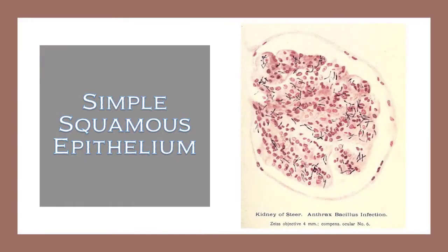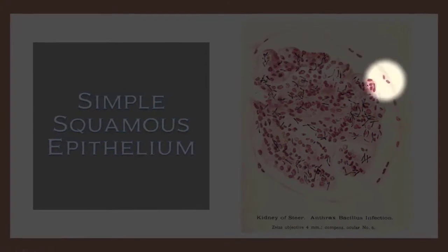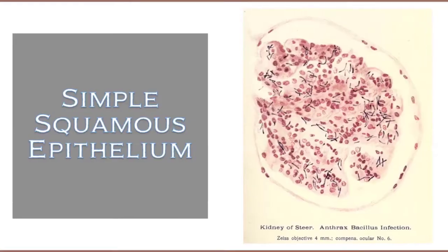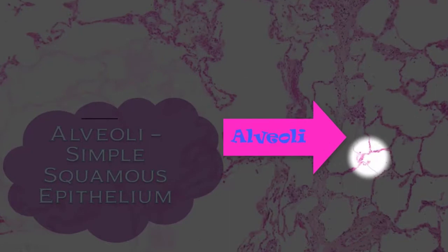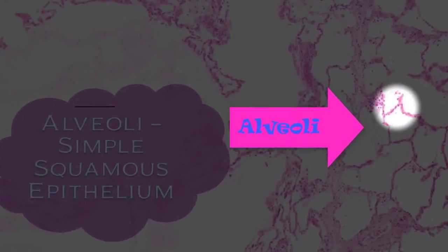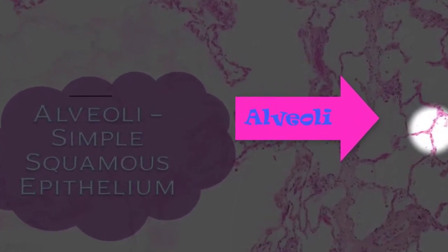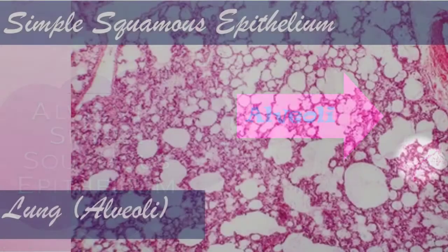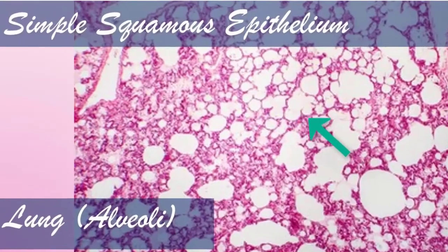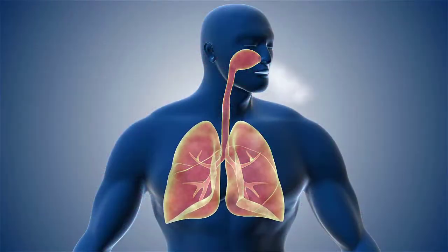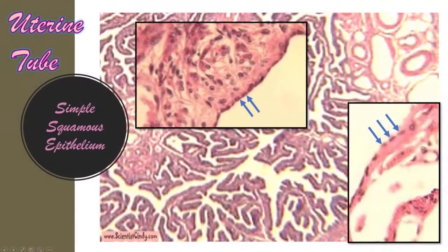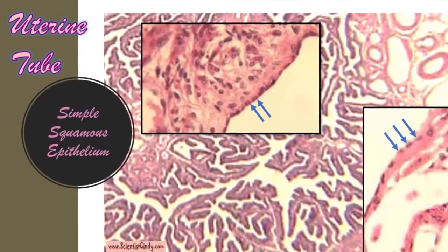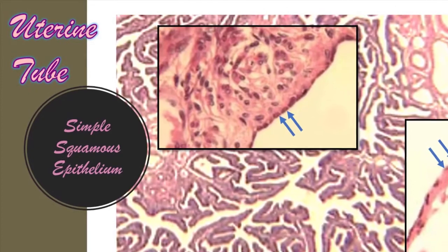We also have simple squamous epithelium that lines the Bowman's capsules in the kidneys. The alveoli of the lungs are also surrounded by simple squamous epithelium. This thin, single-layered tissue allows for gas exchange between the blood and the lungs. We also have simple squamous epithelium lining the uterine tube.